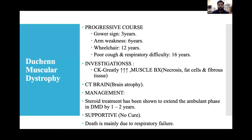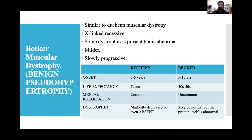Becker muscular dystrophy is a benign pseudohypertrophy similar to DMD — X-linked recessive, but some abnormal dystrophin is present, making it milder and more slowly progressive. Differentiating DMD and Becker: DMD occurs at 3–5 years, Becker at 5–15 years. Life expectancy in DMD is teenage years; Becker has long survival into the 30s–50s. Mental retardation occurs in DMD. In DMD, dystrophin is markedly decreased or absent; in Becker, it may be present but abnormal.